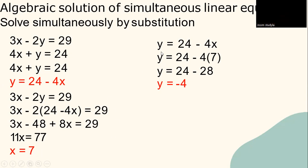Given y equals to 24 minus 4x, substitute the value of x which is 7. It's equal to bracket 7. y equals to 24 minus 28. y equals to minus 4.